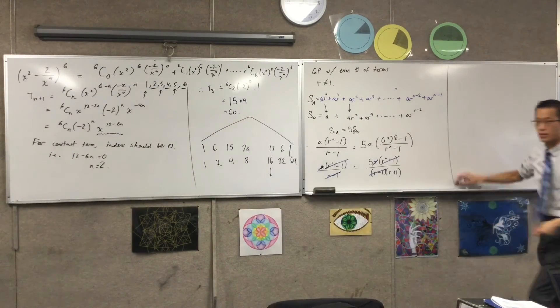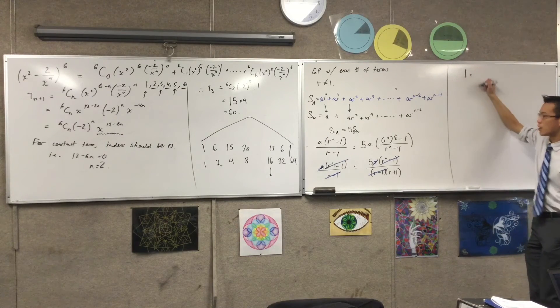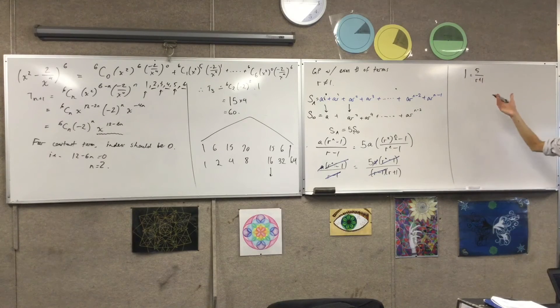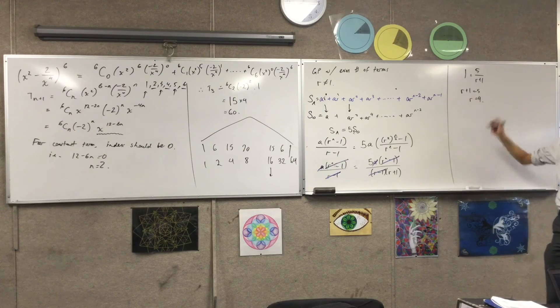So now, what's left? On the left hand side, I have 1. On the right hand side, I have... And what I'm after is r, yeah? So r plus 1 is 5, so r is 4.